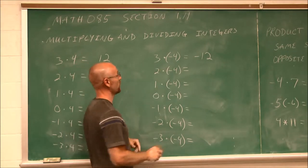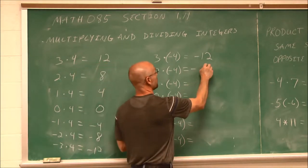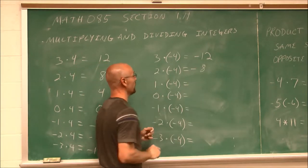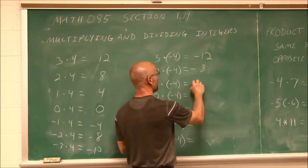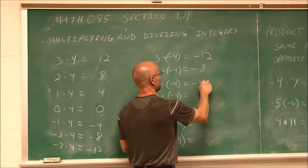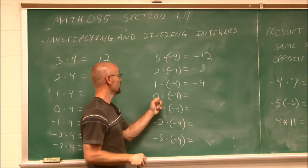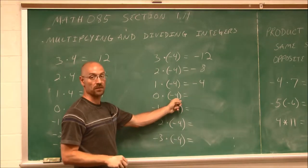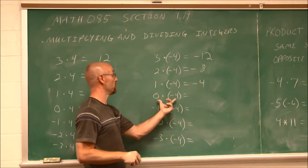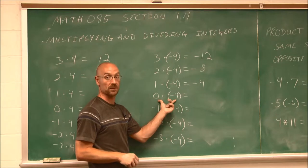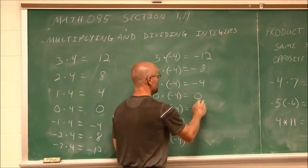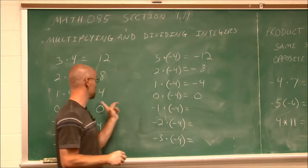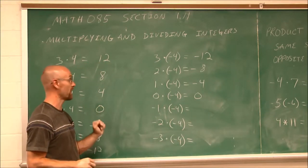2 times negative 4 is negative 8. 1 times negative 4 is negative 4. 0 times negative 4 — hopefully we remember 0 times anything is 0.